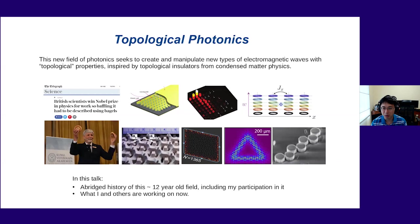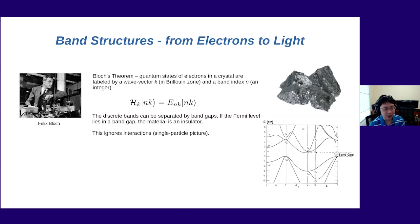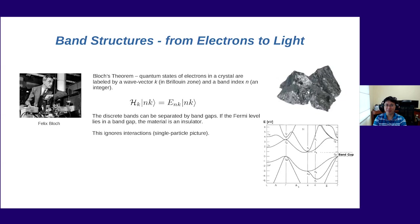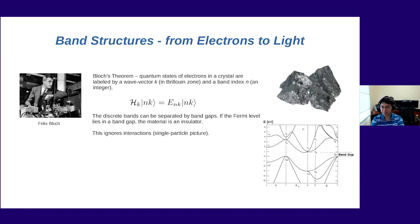The story of topological photonics begins with Felix Bloch, one of the pioneers of applying newly discovered quantum mechanics to explain the properties of solids. Bloch's famous theorem tells you that if you have a crystalline substance — a highly pure sample of aluminum, a metal, or some insulator — and you ask how the quantum states of electrons in this crystalline solid behave, you find that because of translational symmetry, the quantum states are indexed by two numbers: an integer n and a wave vector k.